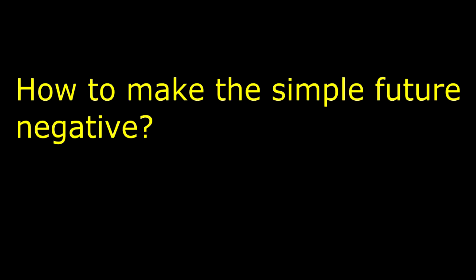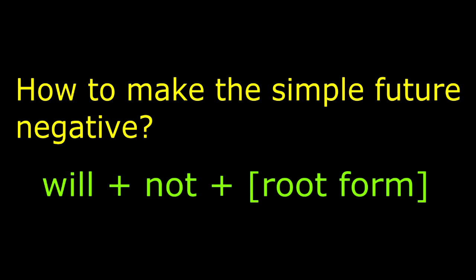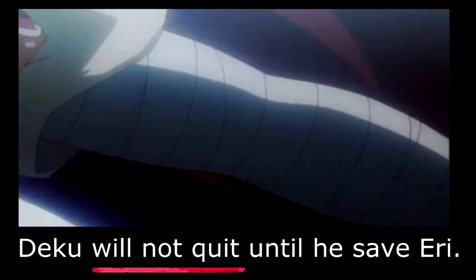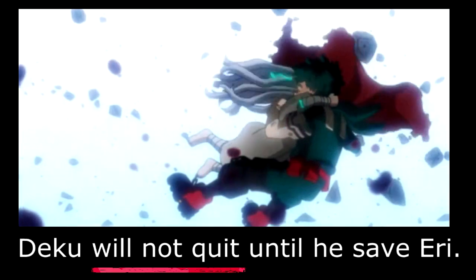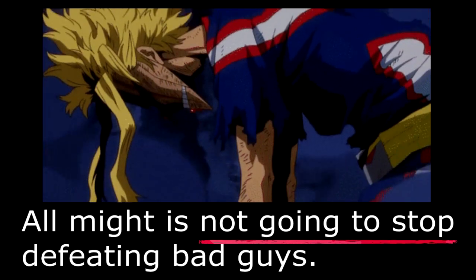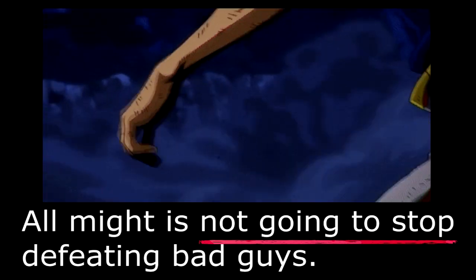Moving on, let's talk about how to make the simple future tense for negative sentences. To make the simple future negative, the formula is: will + not + root form of the verb. Example: Deku will not quit until he saves Eri. If you're going to use the going to construction in a negative sentence, the formula is: am, is, or are + not + going to + root form of the verb. Example: All Might is not going to stop defeating bad guys.